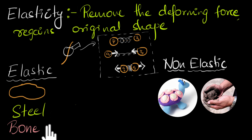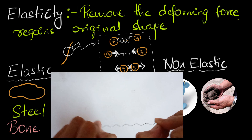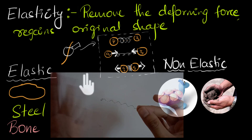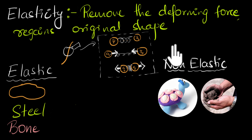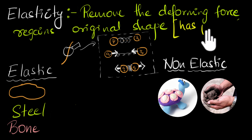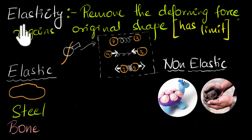But just like with any spring, if you were to pull it with a huge deforming force, it loses its elastic property and undergoes permanent deformation — it doesn't snap back anymore. Similarly, if you were to pull these atoms too far apart, they would also lose their elastic property and there will be permanent deformation. So elasticity has a limit. If the deforming force is too high, the material will undergo permanent deformation, will not regain its original shape, and we would say it has lost its elastic property.